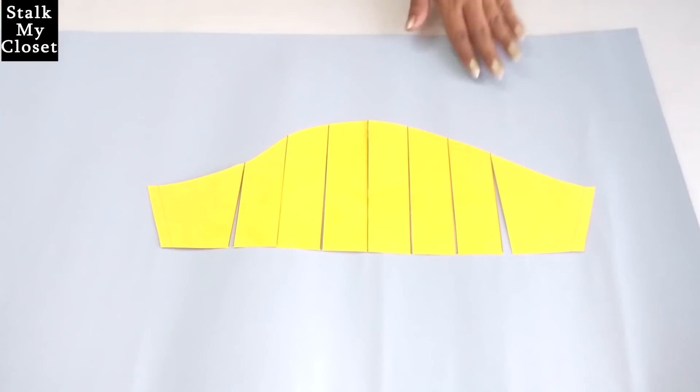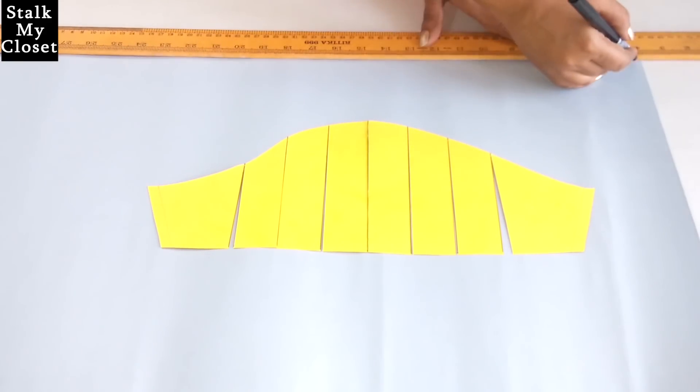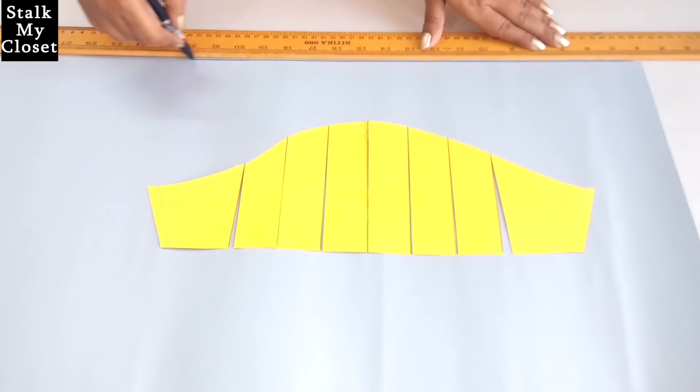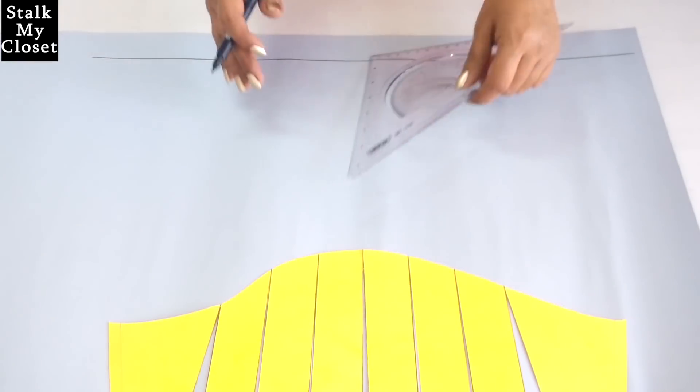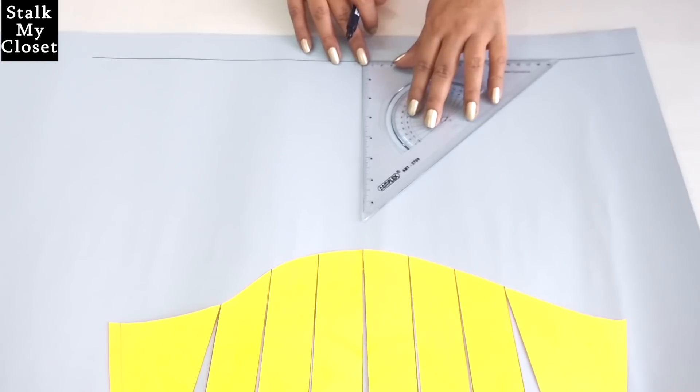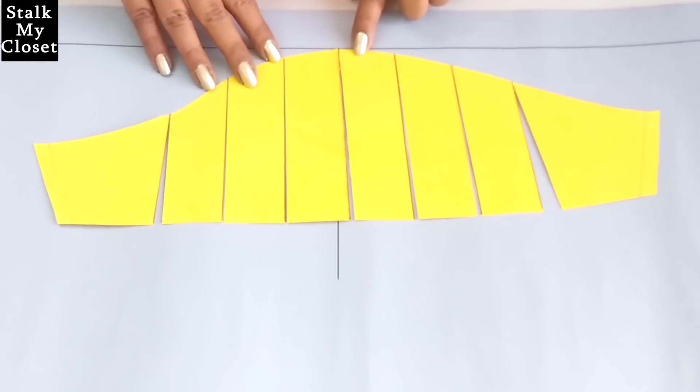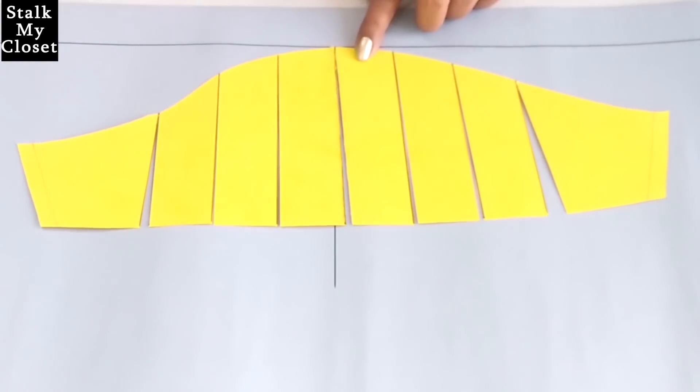Now take new paper and mark a horizontal line like this. Place the pattern matching the center and tape it down.